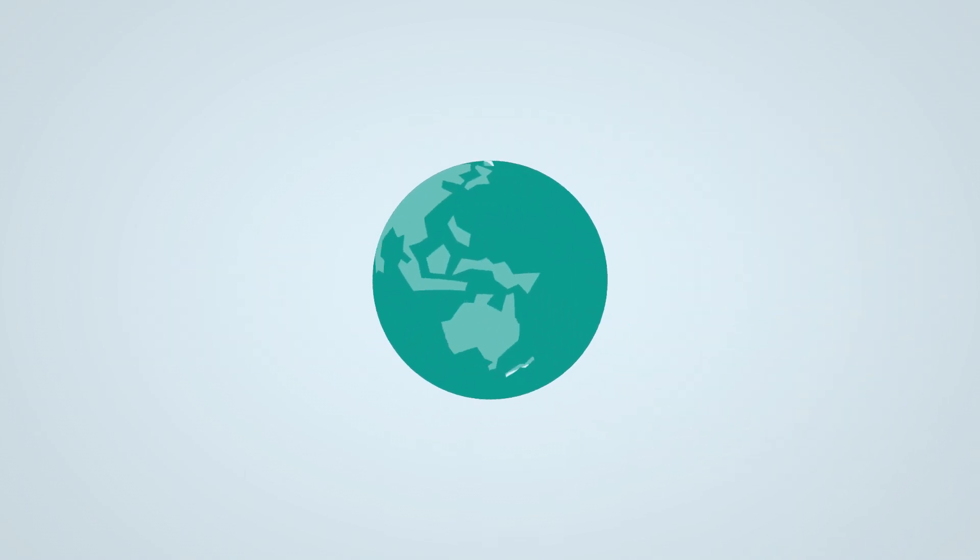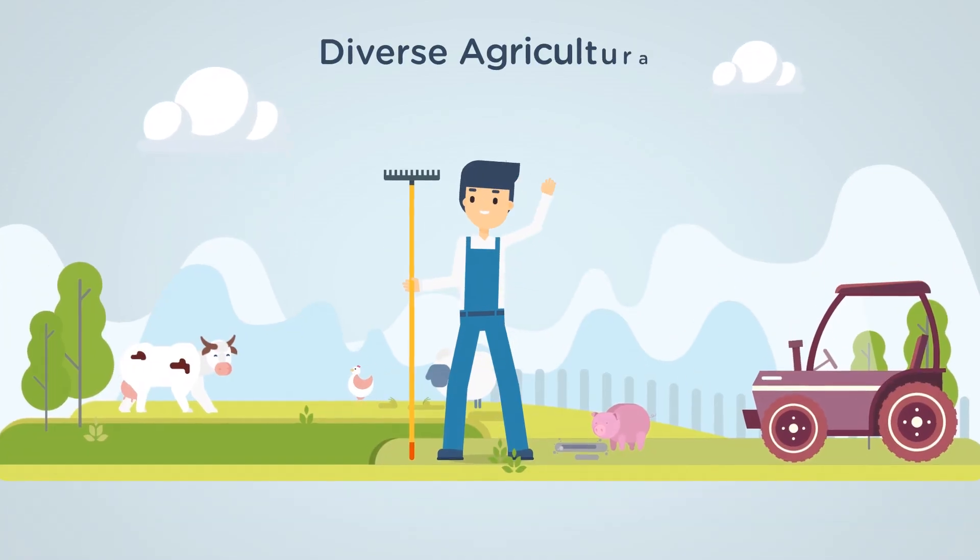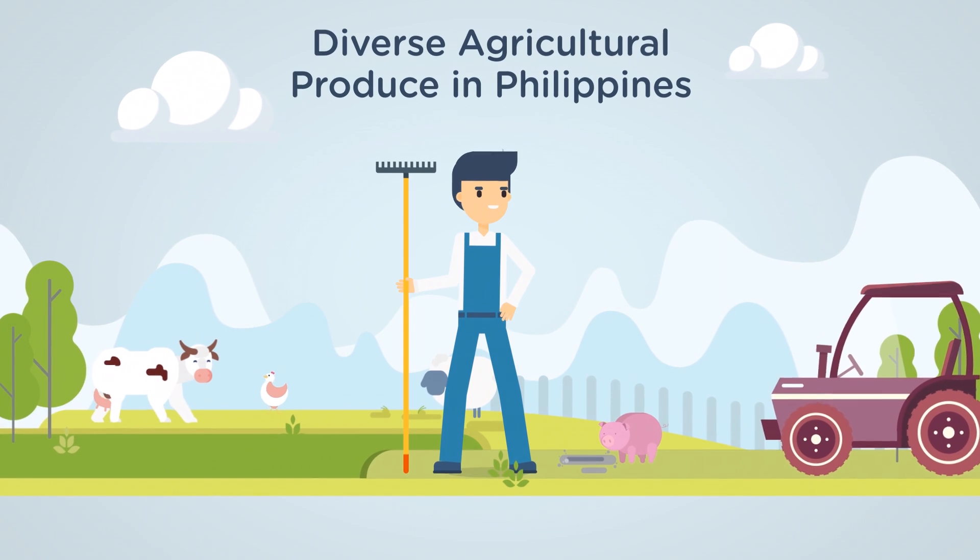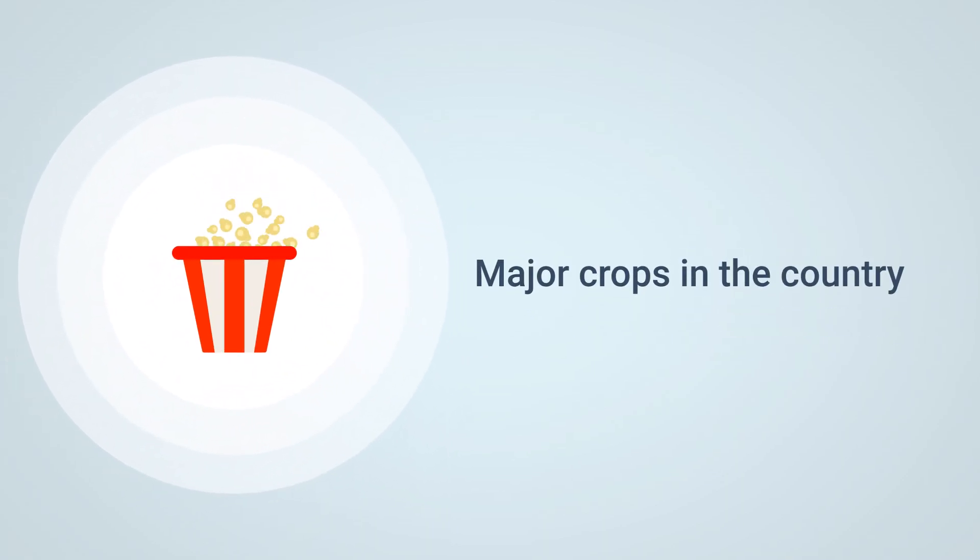A tapestry of abundance: diversity and geographic advantages. The Philippines boasts a rich tapestry of agricultural produce, thanks to its varied geography and climatic conditions. Crops. The country is a major producer of rice, the staple food, and corn.